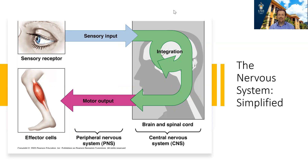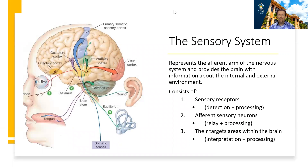Today we're going to focus on the sensory system and discuss basic principles of how all sensory systems work. The sensory system is the afferent arm of the nervous system — bringing information into the nervous system about both the internal environment of the body and the external environment. The sensory system consists of sensory receptors that detect change, relay neurons that carry information from the sensory receptors to the CNS, and specific target areas within the CNS where this information is processed.